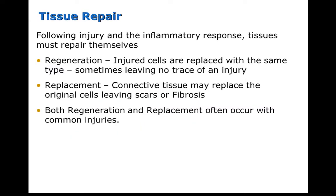After cells are injured and after the inflammatory response, tissues must be able to repair themselves. This can happen by regeneration, where cells will be replaced with the same type of cell, and sometimes there's absolutely no trace of the prior injury. Sometimes the injured cell is replaced with connective tissue, which results in scars or fibrosis, and sometimes cells will be repaired by a combination of regeneration and replacement.